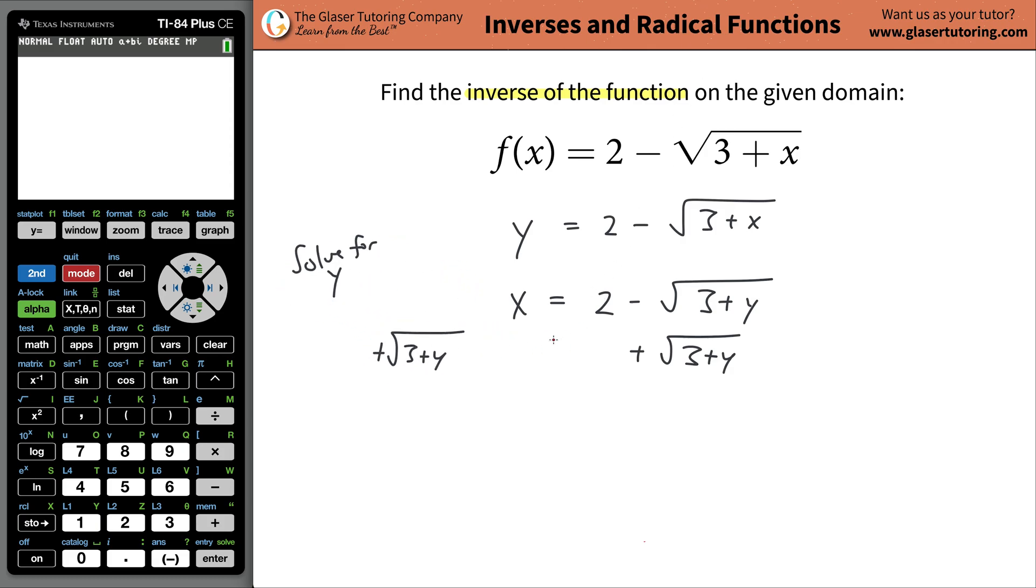And then what I'm going to do is I'm going to bring the x on over to the left-hand side. I'm just going to subtract it. So what that leaves me with, it leaves me with this alone on the left-hand side. So radical three plus y, and then it's going to be two minus x.